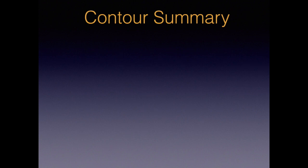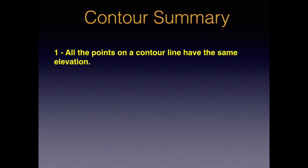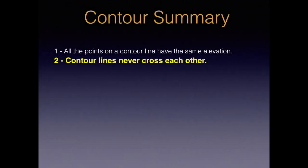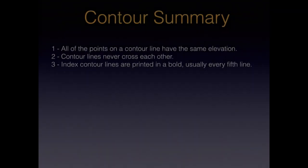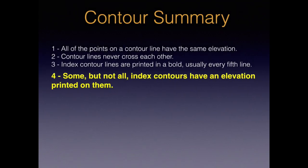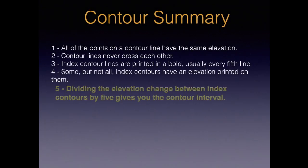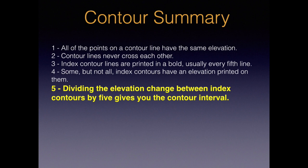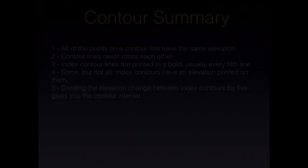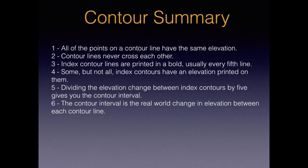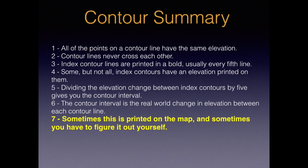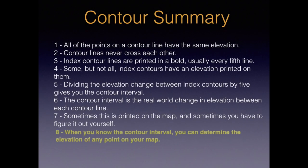That's about it for contours and elevation. Let's summarize what we've covered. All the points on a contour line have the same elevation, and because of this, contour lines can never cross each other. Index lines are printed in bold, usually every fifth line. Some, but not all, index contours will have an elevation actually printed on them. Dividing the elevation change between the index lines by 5 gives you the contour interval. The interval is the real-world change in elevation between each contour line. Sometimes this is printed right on the map and sometimes you have to figure it out on your own. And finally, when you know the contour interval, you can determine the elevation of any point on your map.